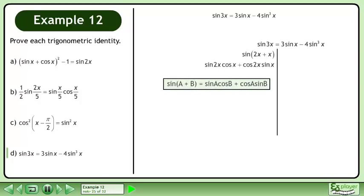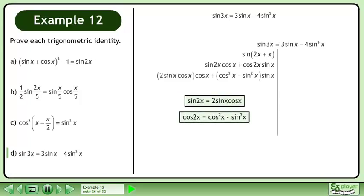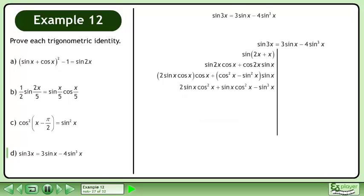Expand using the sine sum identity. Now expand sin 2x using the double angle sin identity and expand cos 2x using the double angle cos identity. Multiply sin 2x through the brackets. Collect like terms.